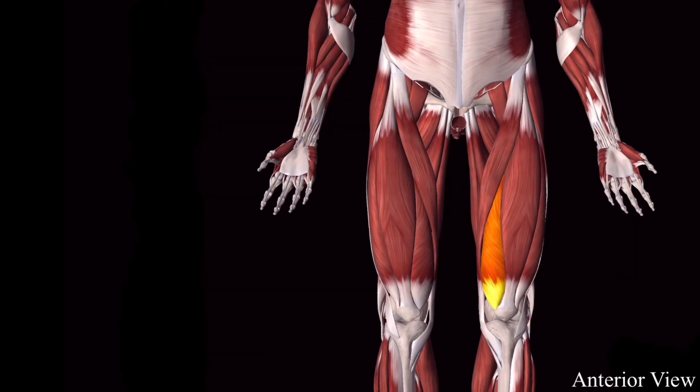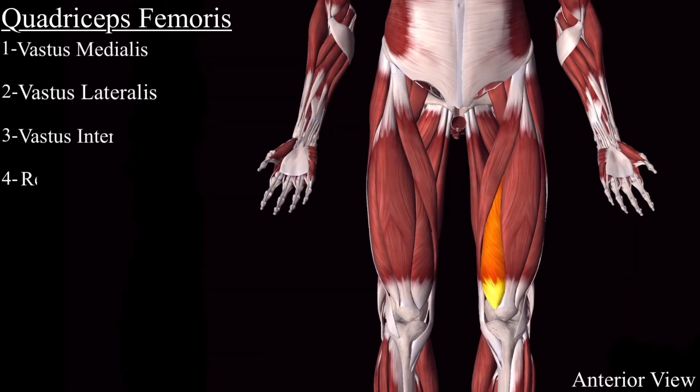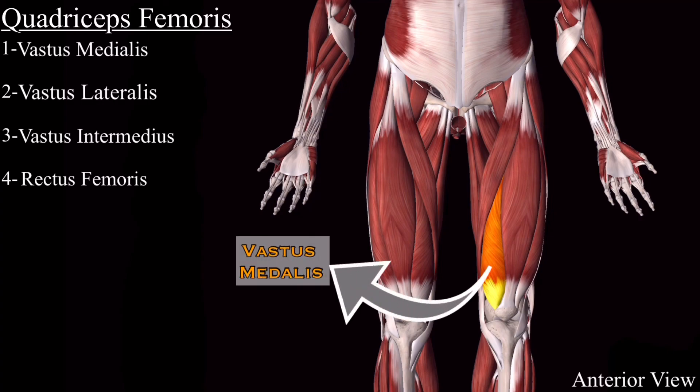Next, I will discuss the four large quadriceps femoris muscles, starting with the vastus medialis muscle.